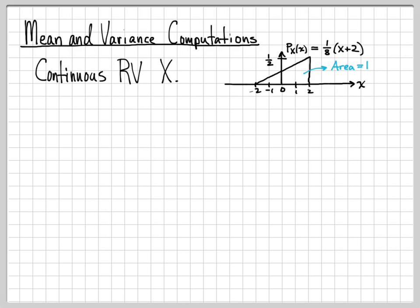When x is negative two, negative two plus two is zero, so the PDF is zero. When x is equal to two, two plus two is four, and four over eight is one half. So it peaks at one half when x equals two. In between, it's just a linear line that grows with x. That is the equation for our probability density function.